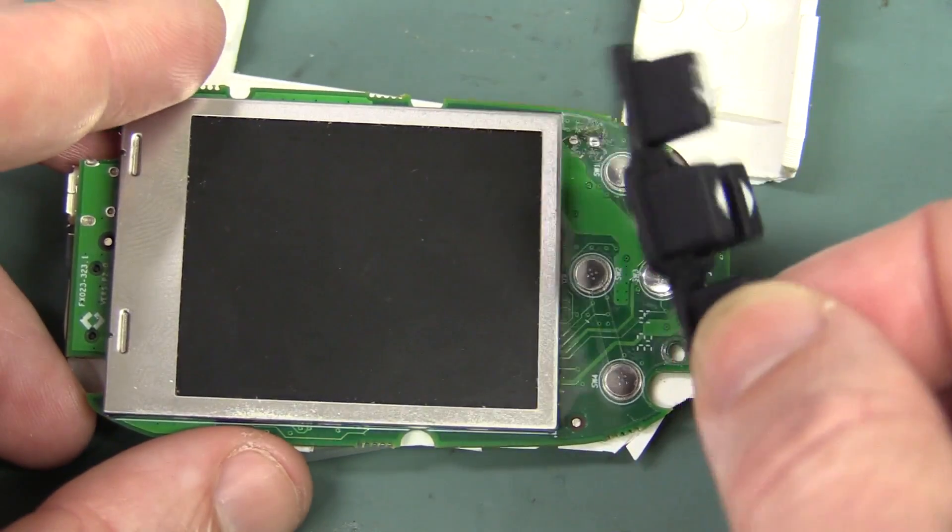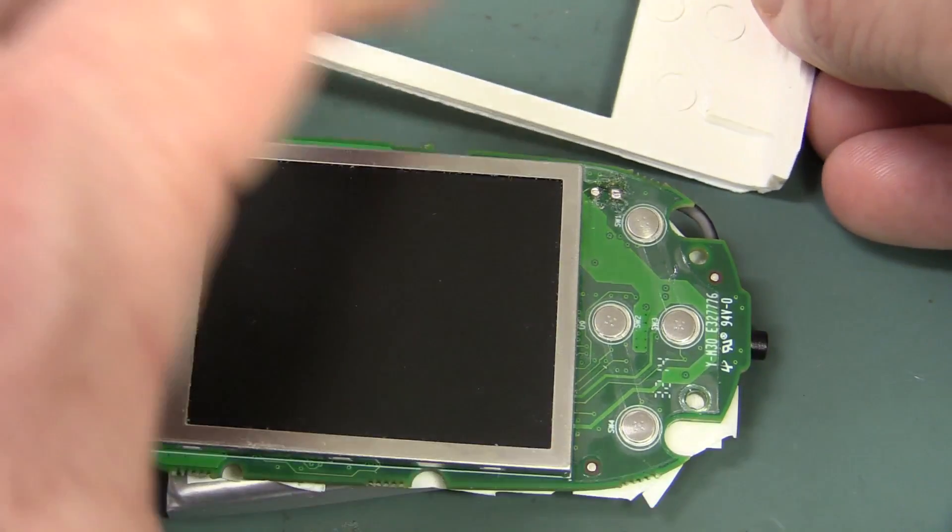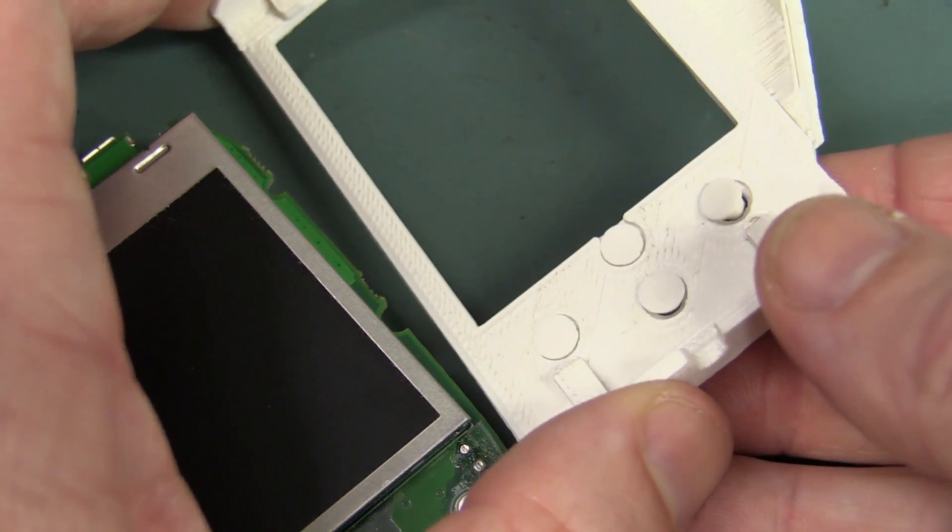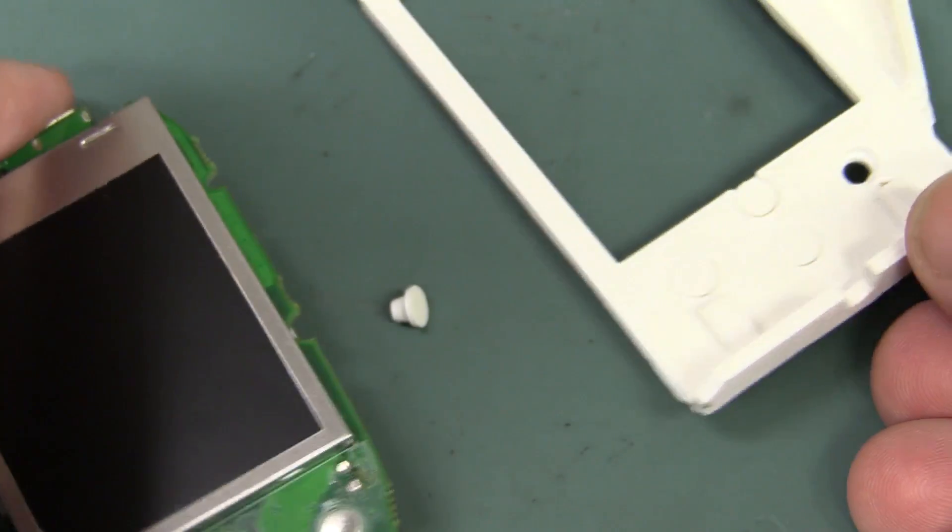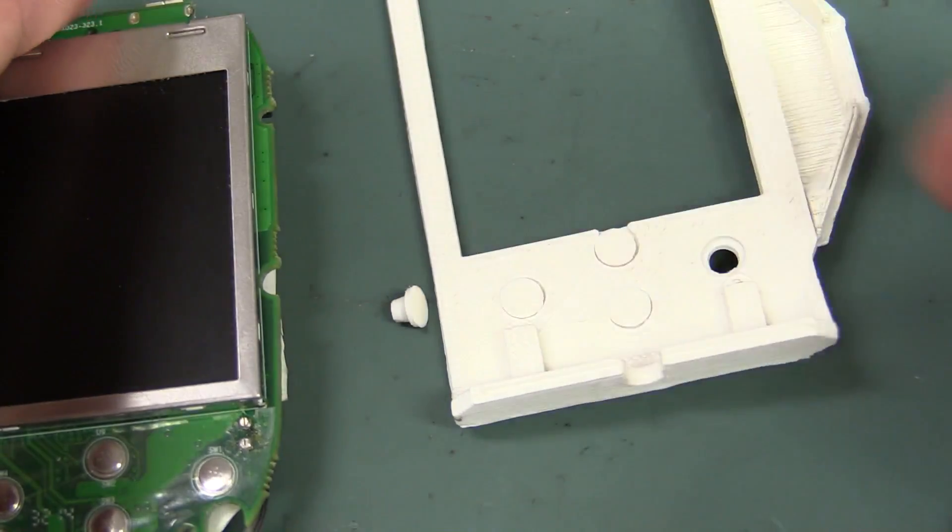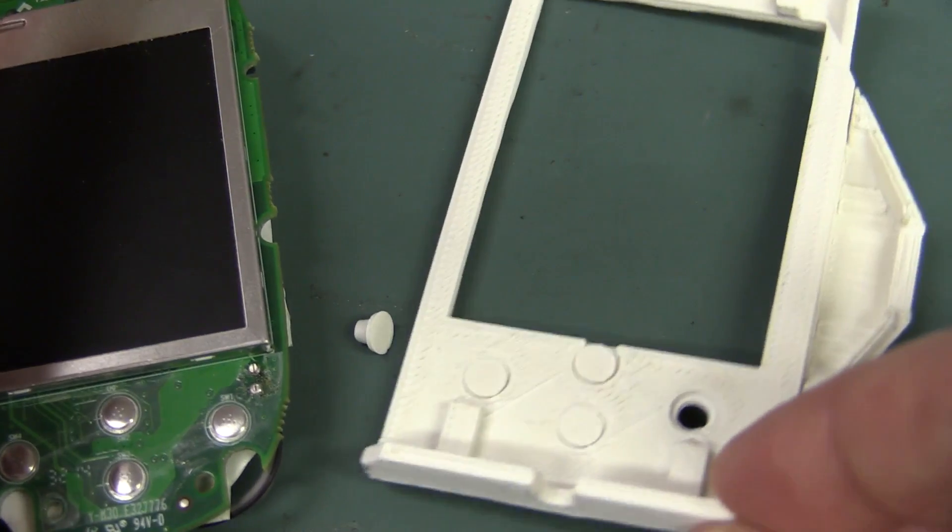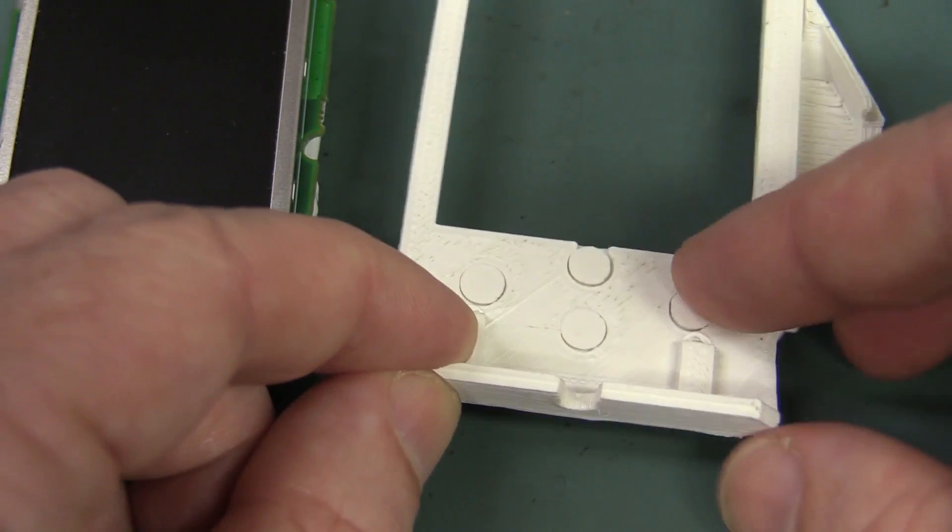We've got our original tactile dome switches on here. This originally had this rubber membrane keypad on top to actually press those buttons, but that was too thick and it had protruded from the case and it would look ugly. So what we did is just 3D print some buttons that went straight through the case like that. We've got four little buttons in there.